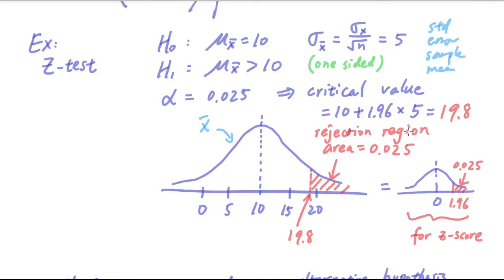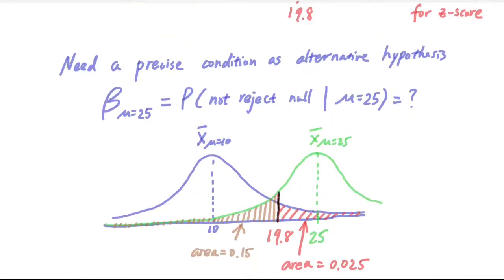So this is where the 1.96 comes from. So now that we have reviewed what alpha is, we are ready to talk about beta. Because alpha and beta actually go hand in hand.